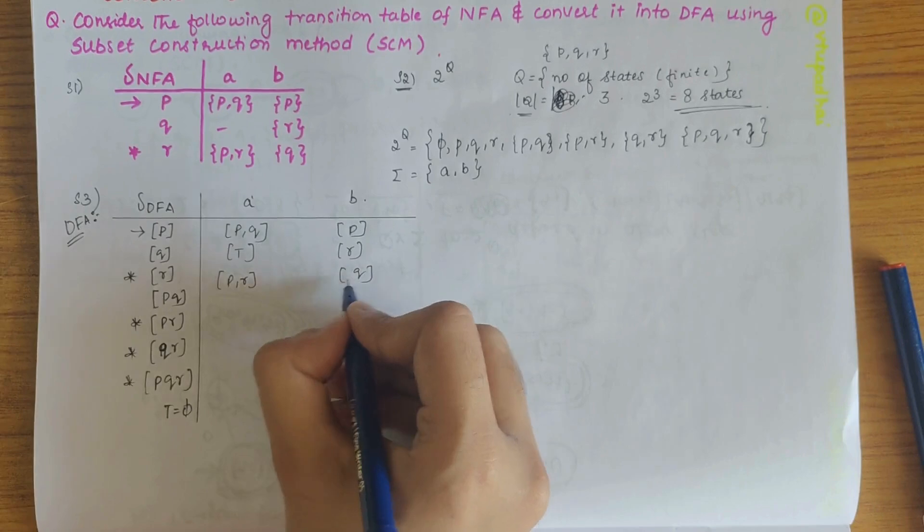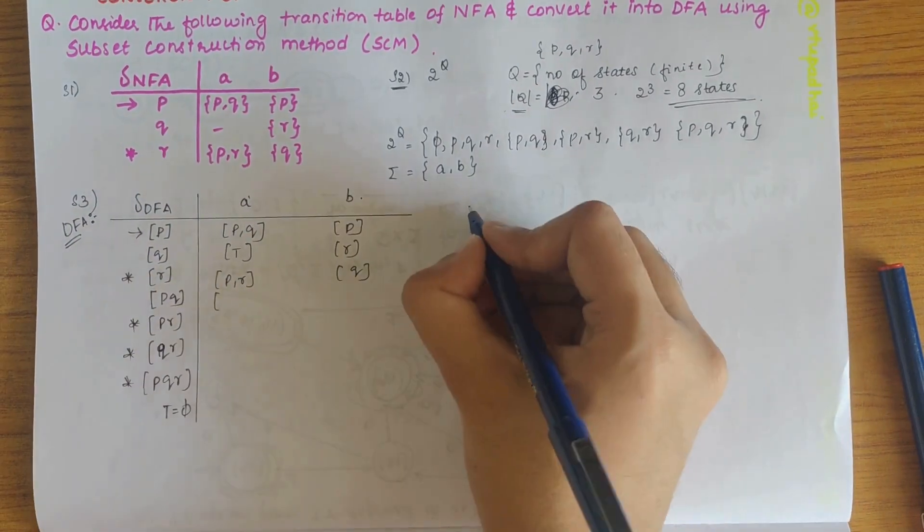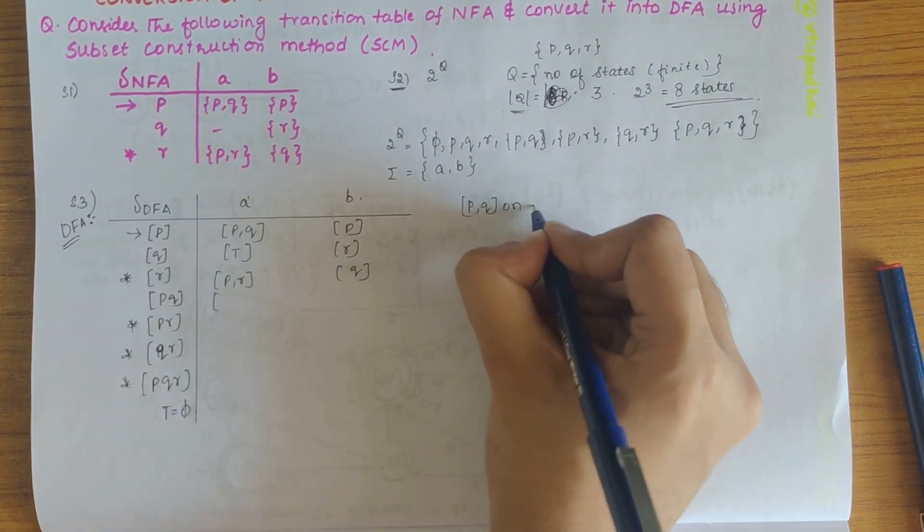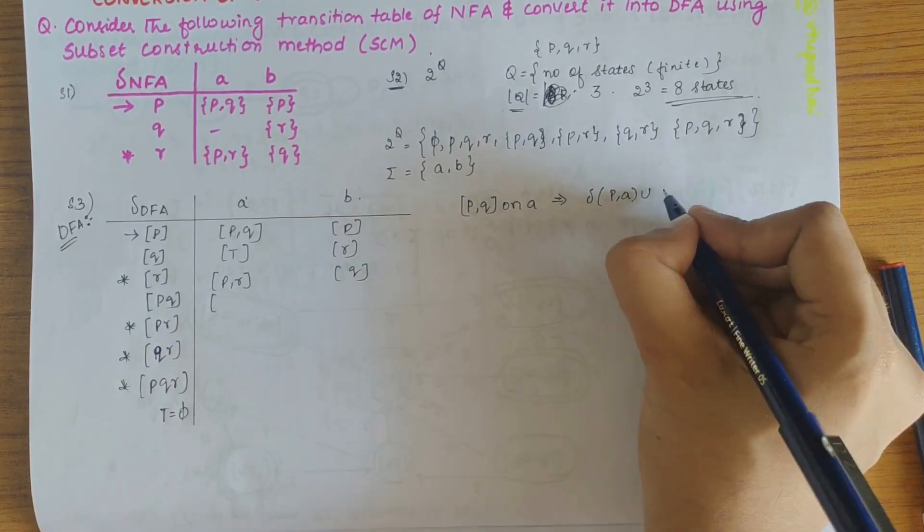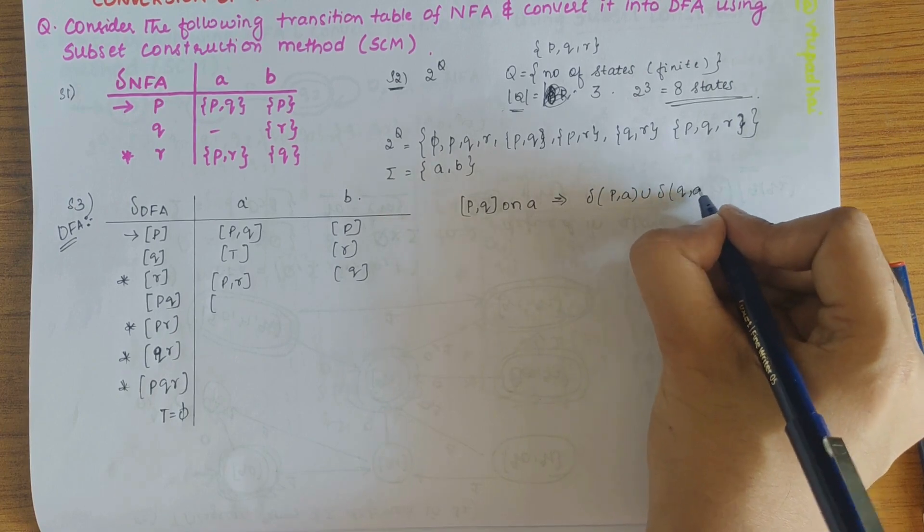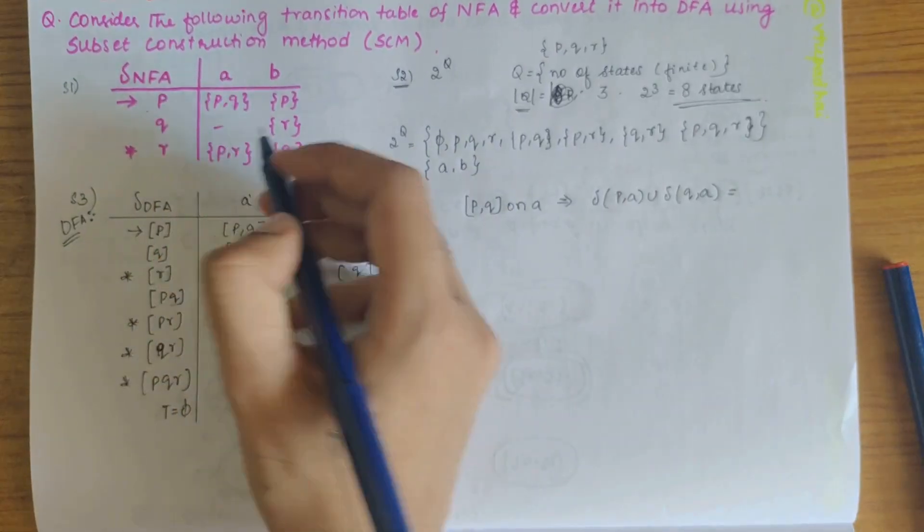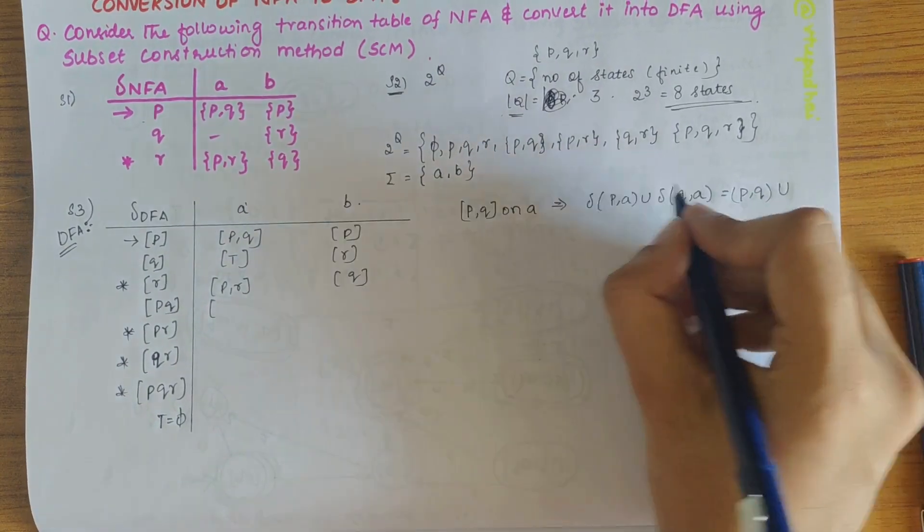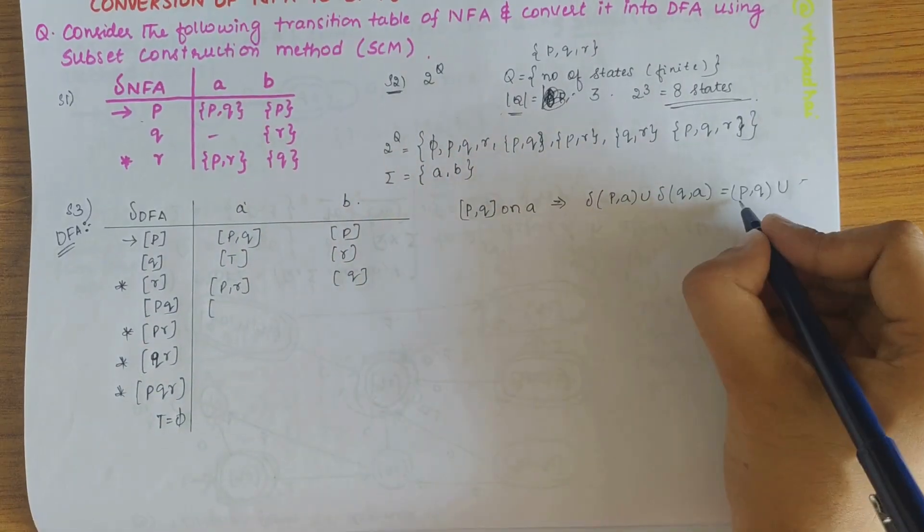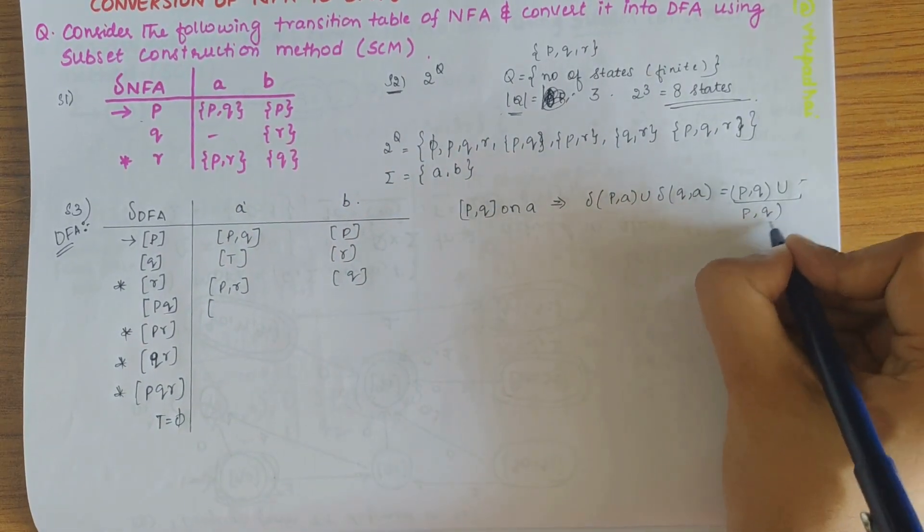So pq on a, pq on a can be written as transition of p on a union, transition of q on a, transition of p on a is pq union, transition of q on a is null. So this answer you get it as pq itself.